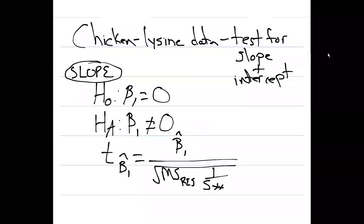The example data set we're going to use here is the chicken lysine data. You might remember this data set has 12 observations. A certain number of chickens ingested lysine to help them be healthy and to grow, and so we have the observations here.